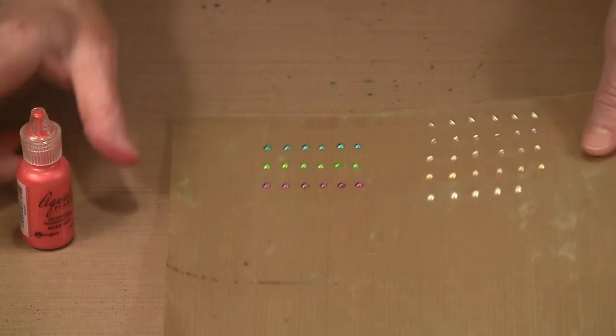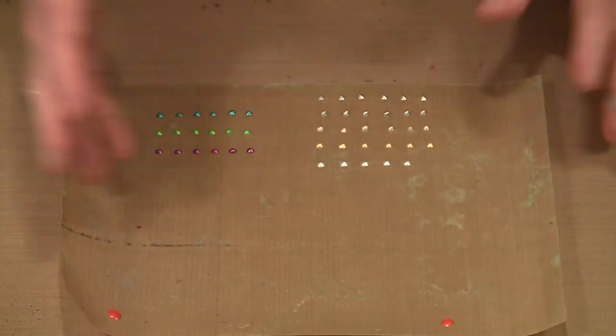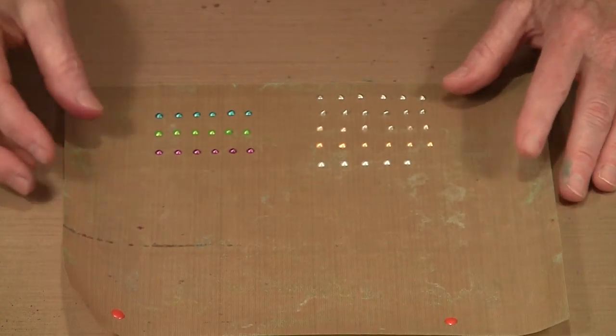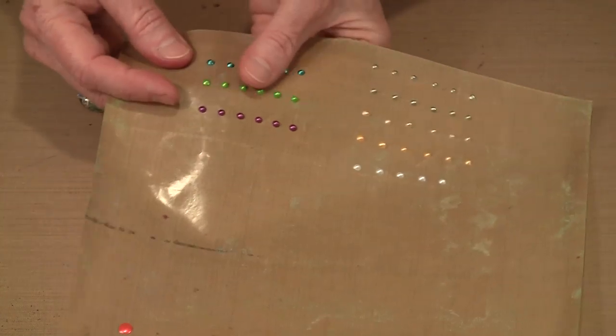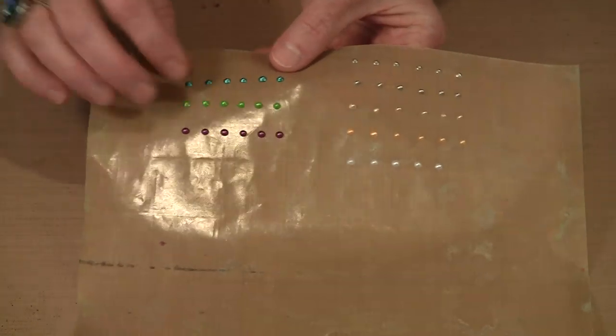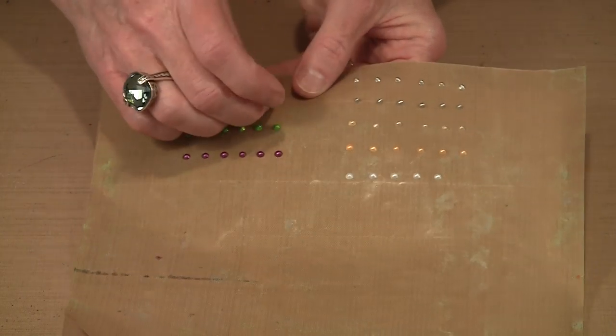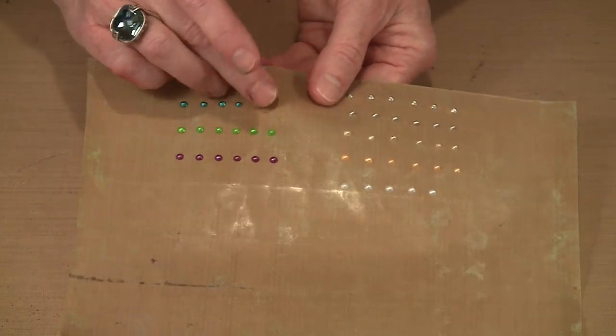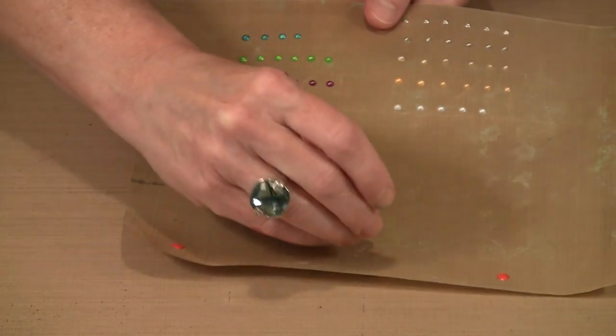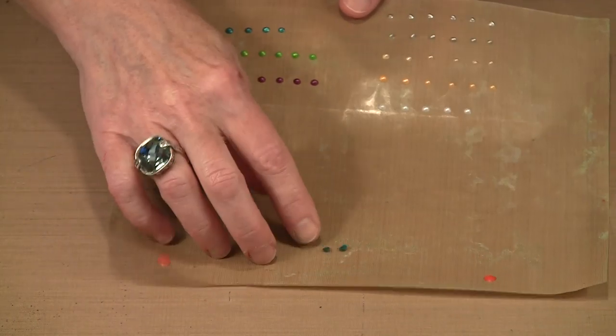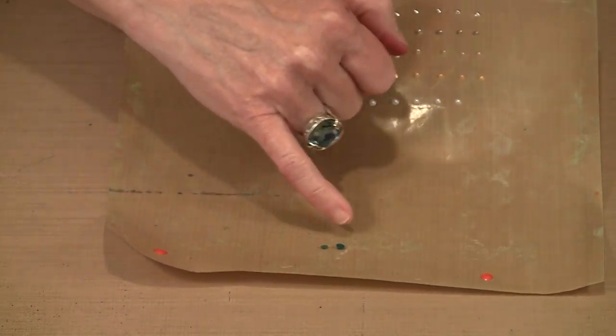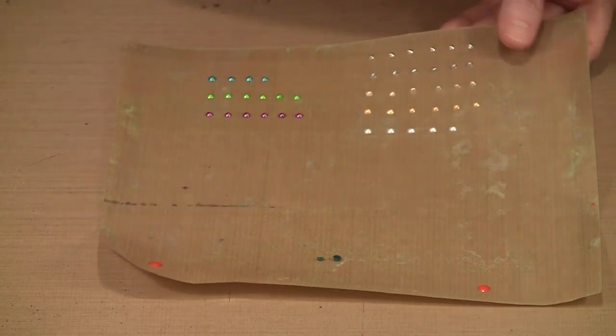Now something else that you can do. This is a piece of non-stick craft sheet. I did these yesterday so these are all dry. But what you can do is put these on here, let them dry, and then when you pop them off, you have these really cool little flat backed embellishments. The bottom of them is really flat from having sat on here.